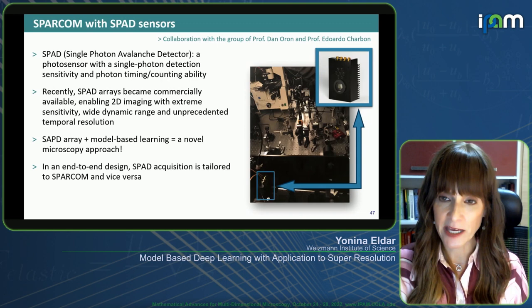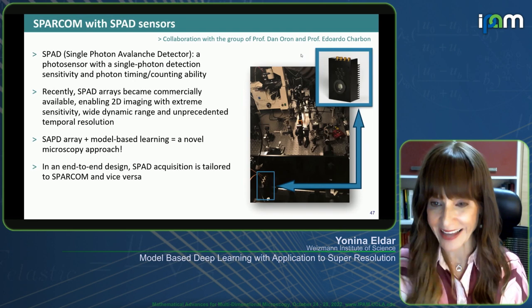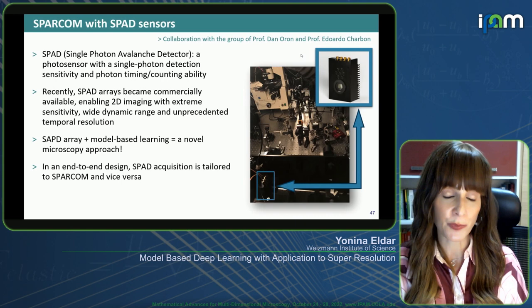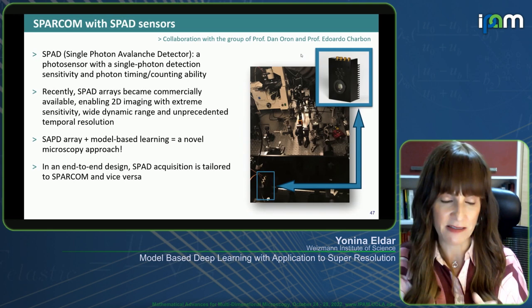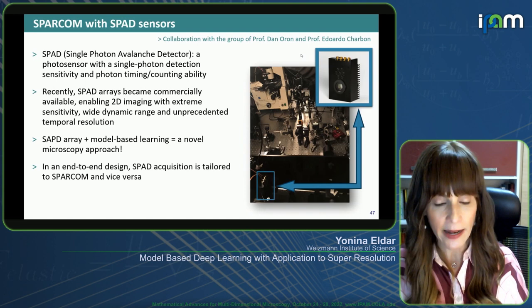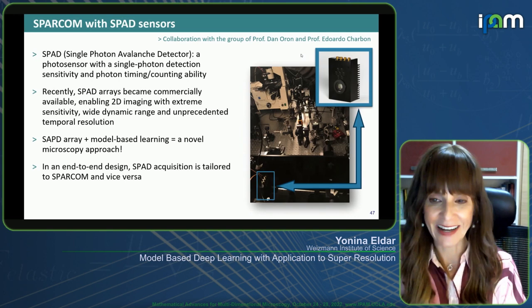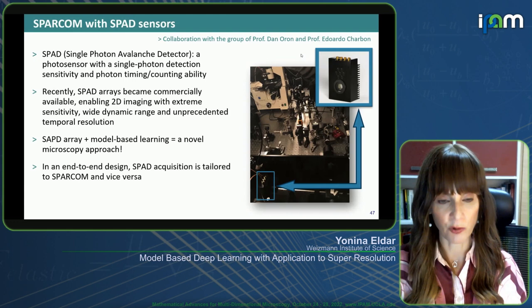A more recent application, done together with Professor Dan Aron and Professor Eduardo Charbin, involves SPAD arrays — single-photon avalanche detectors, an exciting type of photosensor using only single-photon detection. These have just recently become commercially available, allowing extreme sensitivity at the quantum level. We have a postdoc whose focus is using learned SPARCUM ideas on SPAD acquisition, and we're also tailoring the acquisition to fit the type of recovery we're doing based on correlation. So far we've been getting very exciting results.